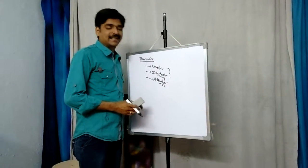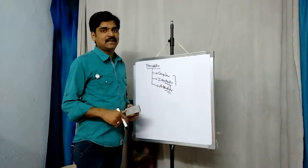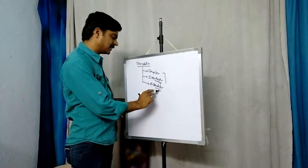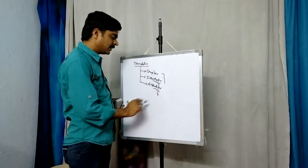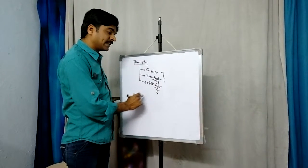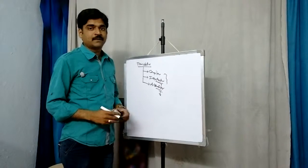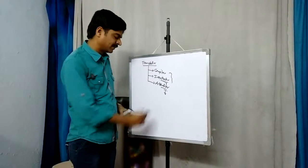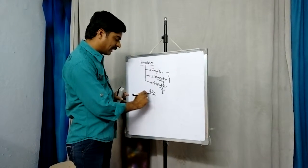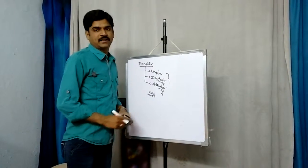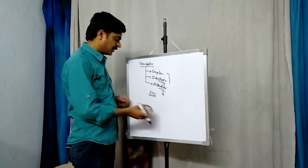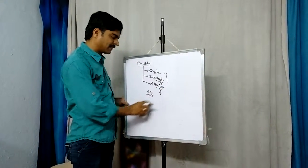An assembler is also one type of translator. It is used to convert assembly language to object code. Assembly language uses symbols to perform certain actions — for example, to perform addition of two numbers we use 'add'. So 'add' is a symbol to perform addition, and for that purpose the assembler is used.